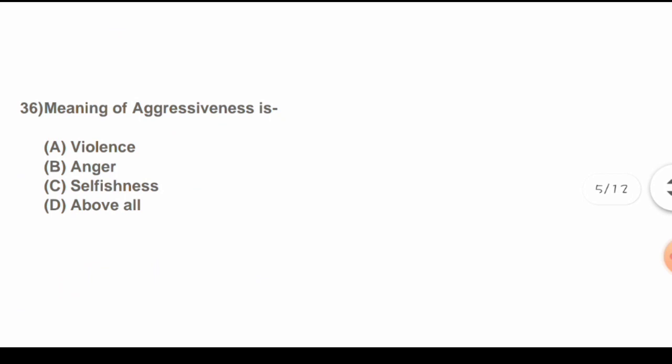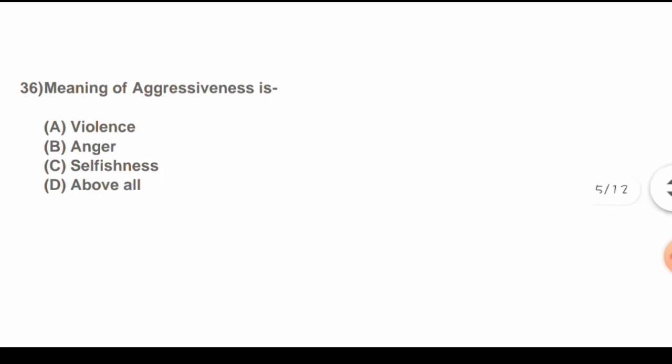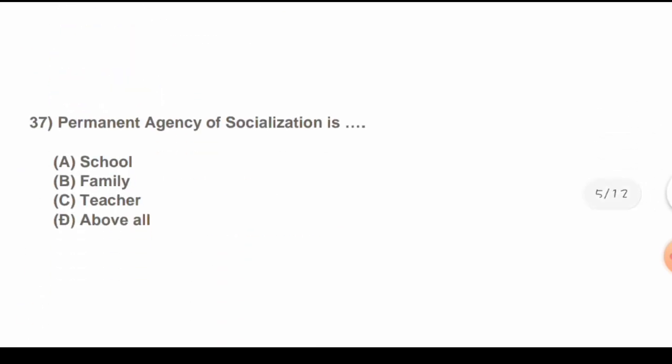Question 36: Meaning of aggressiveness. Options are: A) Violence, B) Anger, C) Selfishness, D) All of the above. The correct answer is D) All of the above.